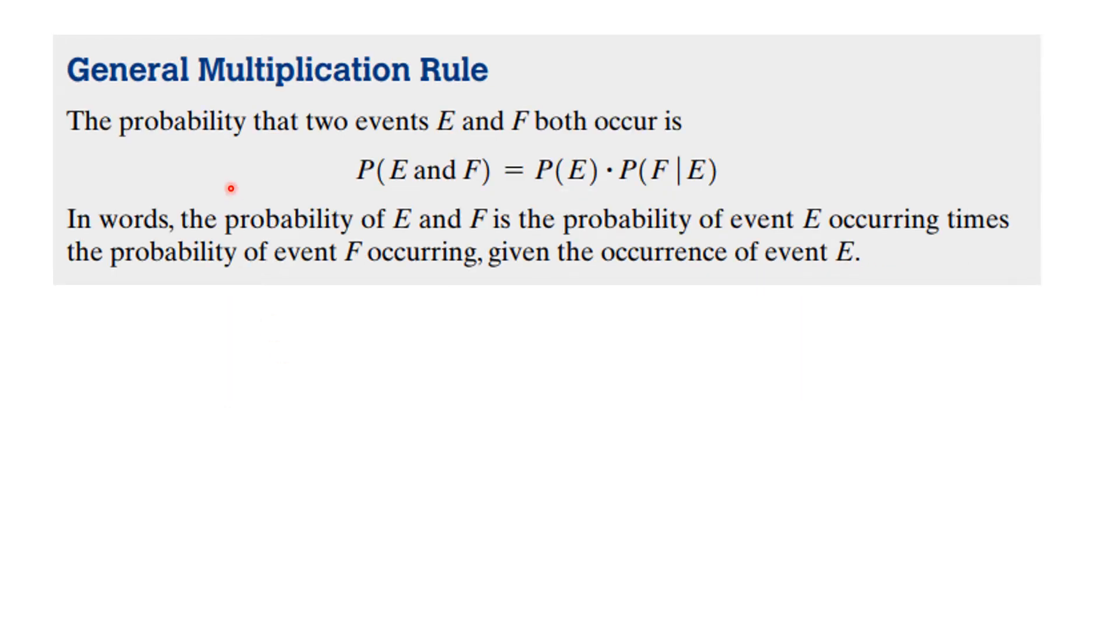And that leads us to the general multiplication rule. You remember that when events were independent, we just multiplied the probability. But now what we can do is we can go back and solve the previous equation. The previous equation said the probability of F given E is equal to the probability of this divided by this.